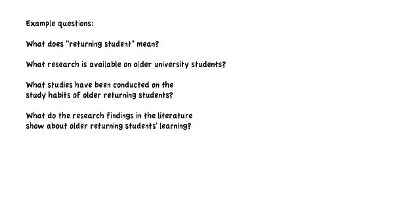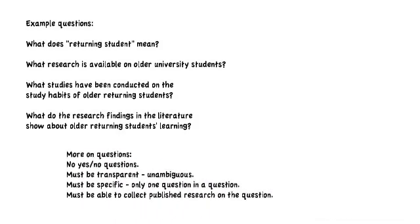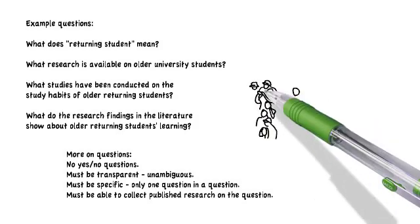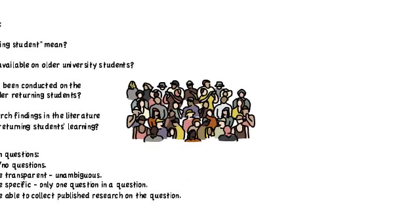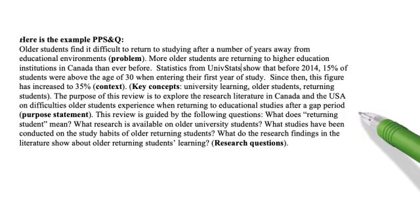For example: What does 'returning student' mean? What research is available on older university students? What studies have been conducted on the study habits of older returning students? What do the research findings show about older returning students' learning? All those questions are around the problem. Try to avoid yes-no questions, make the questions unambiguous, avoid overly complicated questions, and try to have only one question in each question.